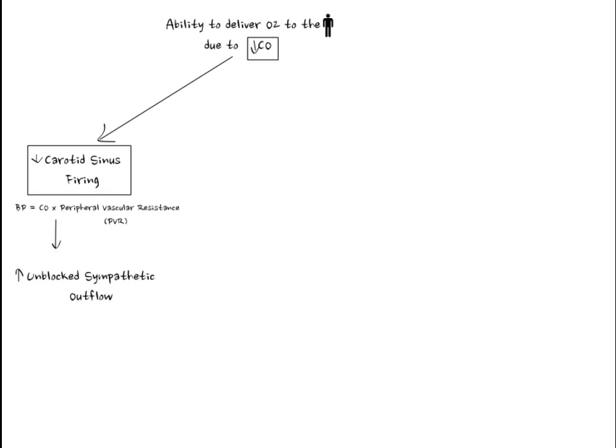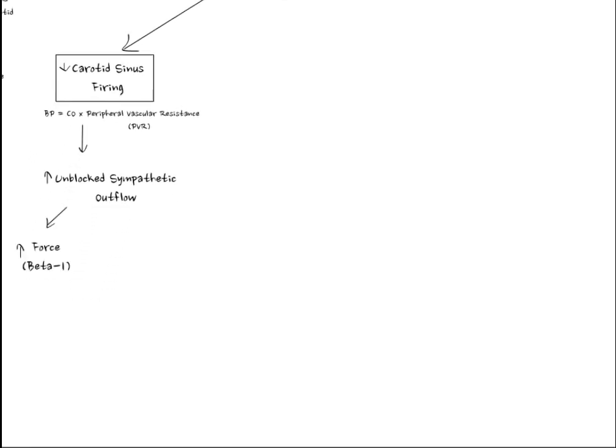This norepinephrine increases the force of heart contraction by interacting with beta-1 receptors in the heart, and increases the rate of contraction also through beta-1 receptors. Norepinephrine also activates alpha-1 receptors in the venous system, thereby increasing preload, and in the arterial system, thereby increasing afterload. Preload is the filling pressure the heart faces prior to contraction of the ventricles, whereas afterload is the amount of pressure the heart faces upon contraction, trying to push blood out through the arterioles.